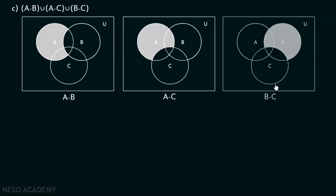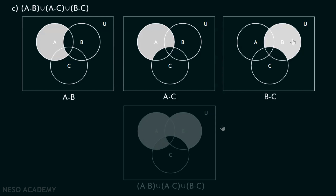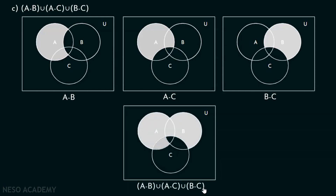And what is B minus C? B minus C means all B but not C. Now, what is A minus B union A minus C union B minus C? This is very simple — we want to include everything of A minus B, A minus C and B minus C. So we must include this shaded region, this region, and this region. This is how A minus B union A minus C union B minus C looks like — this is the Venn diagram for A minus B union A minus C union B minus C.